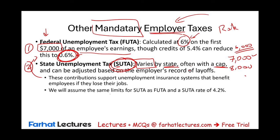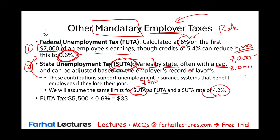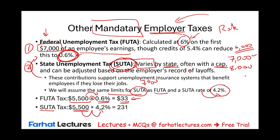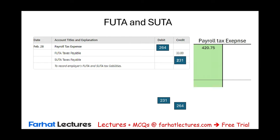For this example, we assume the same $7,000 limit for SUTA as for FUTA, and a SUTA rate of 4.2%. For an employee earning $5,500 — who has not yet reached the $7,000 cap — we calculate: FUTA = $5,500 × 0.6% = $33; SUTA = $5,500 × 4.2% = $231. The journal entry credits SUTA payable $231 and FUTA payable $33.